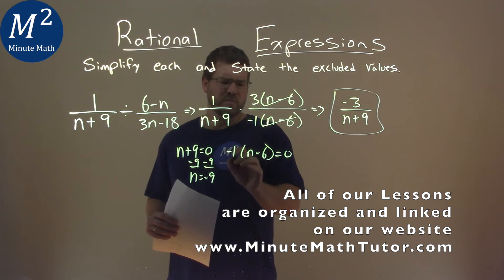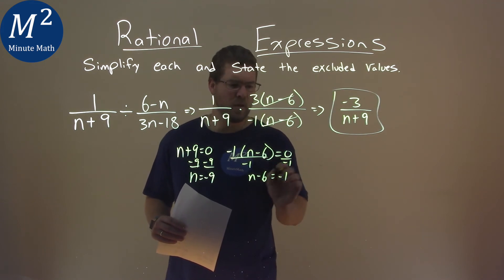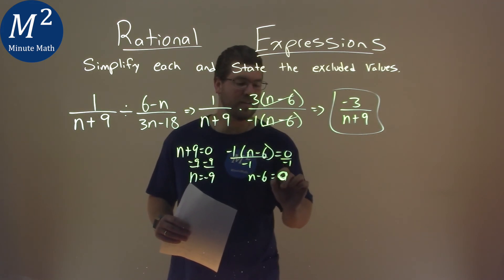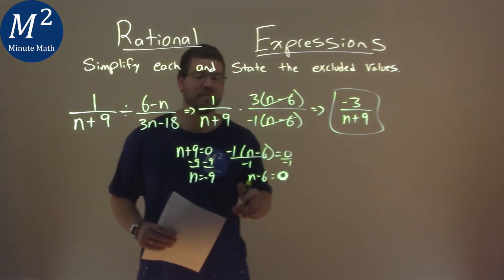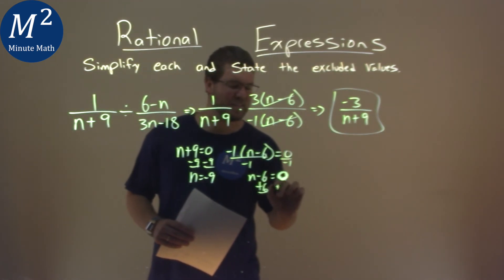We won't divide both sides by negative 1, doesn't really do anything. We have n minus 6 equals... or sorry, equals 0, I'm getting distracted here, equals 0. 0 divided by negative 1 is 0. Add 6 to both sides, and we have n equals positive 6.